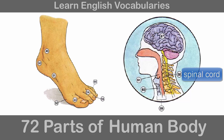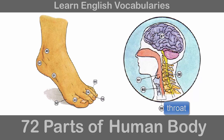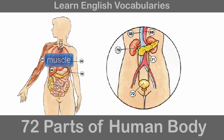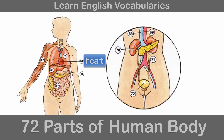Brain 58. Spinal cord 59. Throat 60. Windpipe 61. Esophagus 62. Muscle 63. Lung 64. Heart 65.